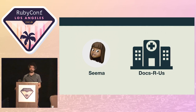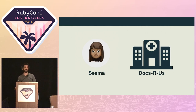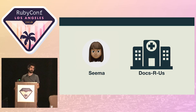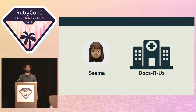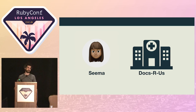Meet Seema. Seema is an engineer at DoxaRus, a company that provides appointment booking software for medical professionals. DoxaRus was founded in 2008 and has grown from a tiny startup to a company employing nearly 100 people. The app itself is a decade-old majestic monolith. Code dating back to Rails 1.0 can still be found in its ancient hulk.